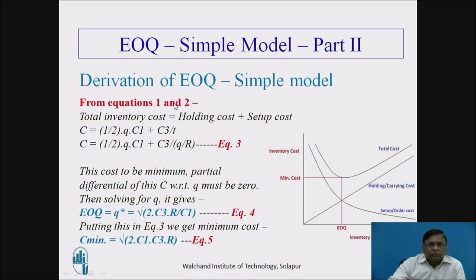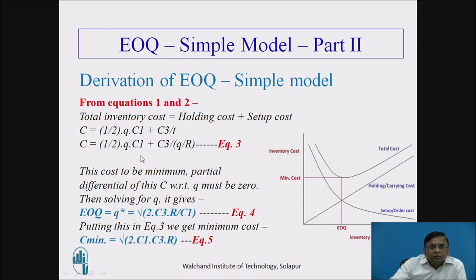From equations 1 and 2, total inventory cost equals holding cost plus setup cost, with shortage cost being zero. So total cost C equals one-half Q times C1 (holding cost) plus C3 upon T (setup cost). Replacing T with Q upon R, we get the total cost equation as the sum of holding cost and setup cost. Shortage cost C2 does not appear here because we have assumed it to be zero.